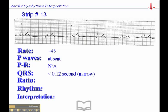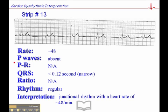If there are no P waves, there's no PR interval, and the QRS is narrow — less than 0.12 seconds. The ratio is not applicable. The rhythm is regular, and when you have a regular narrow complex rhythm without discernible P waves, there's only one interpretation: a junctional rhythm with a heart rate of 48. The intrinsic rate for the AV junction is between 40 and 60, which fits nicely and supports that interpretation.